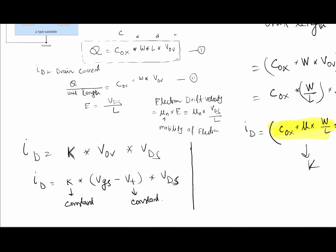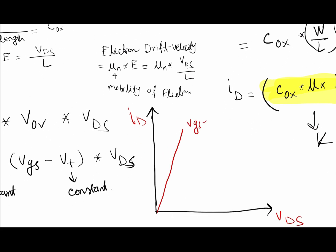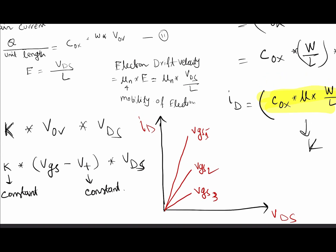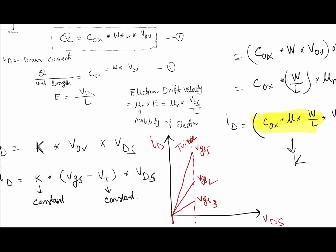If we make a plot with VDS on the x-axis and ID on the y-axis, for a particular VGS the current increases linearly. For different values of VGS1, VGS2, and VGS3 (decreasing), we get different linear curves. This region is called the triode region — when we apply a very small VDS, the current is linear.